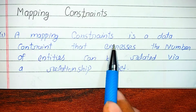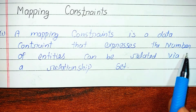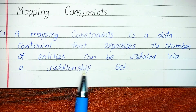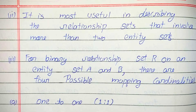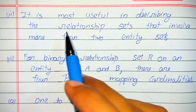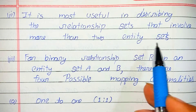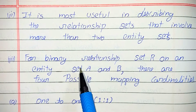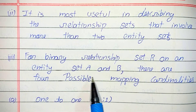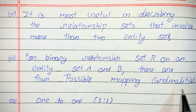A mapping constraint is a data constraint that expresses the number of entities that can be related by a relationship set. It is most useful in describing the relationship set that involves more than one entity set. For a binary relationship set on entity sets A and B, there are four possible mapping cardinalities.